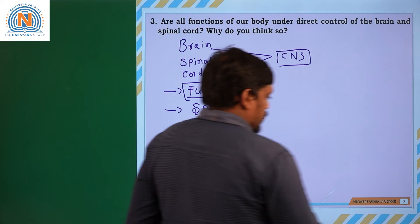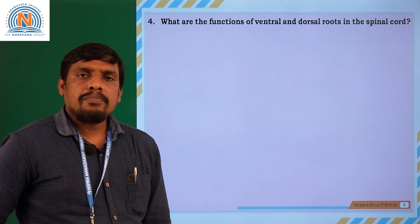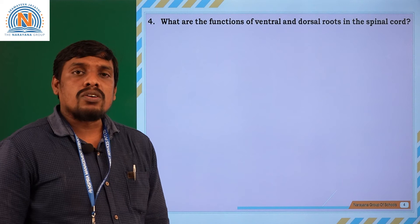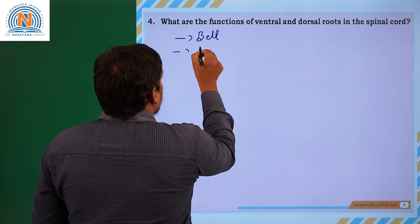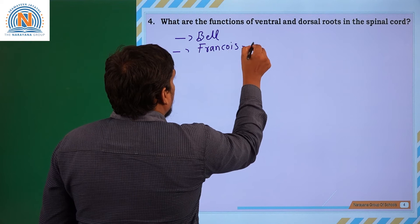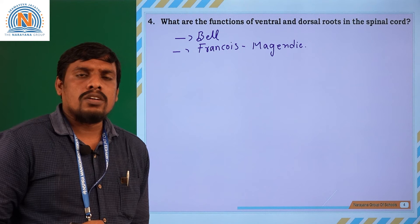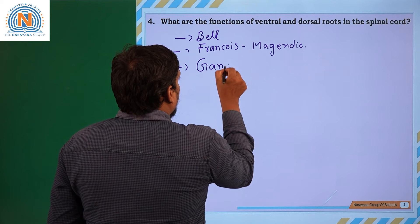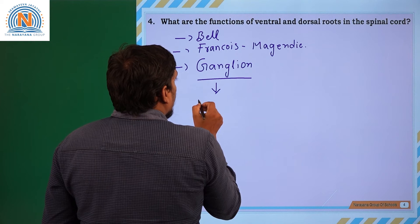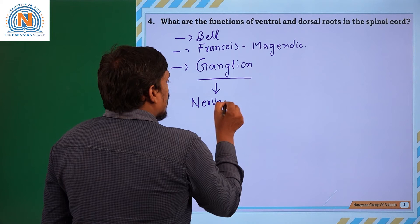Fourth question: What are the functions of the ventral and dorsal roots in the spinal cord? Scientists Bell from Scotland and François Magendie from France conducted experiments on the ventral root and dorsal root ganglia of the spinal cord. A ganglion is a structure which contains a cluster of nerve cells — a group of nerve cells clustered together.